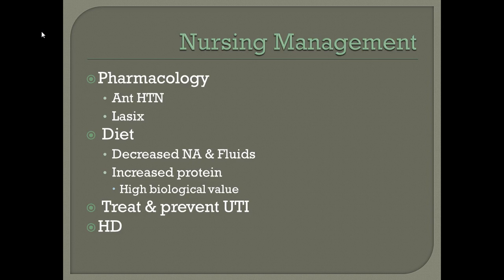Nursing management for CGN includes antihypertensives — usually a calcium channel blocker to help increase GFR — and Lasix. Patients need decreased sodium and decreased fluid. Because CGN is a chronic disease state, protein intake is increased from the acute stage to a more normal amount, as we cannot have patients decrease protein indefinitely or they won't be able to make new cells. We want high biological value proteins such as eggs, milk, cheese, beans, tofu, and soybeans — not flesh or muscle proteins. We also treat and prevent UTIs and potentially use hemodialysis.